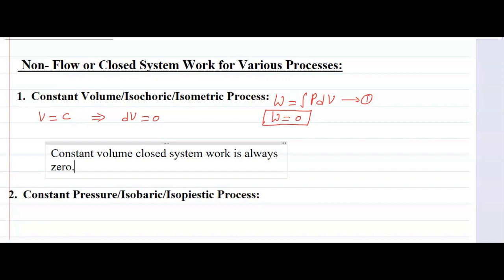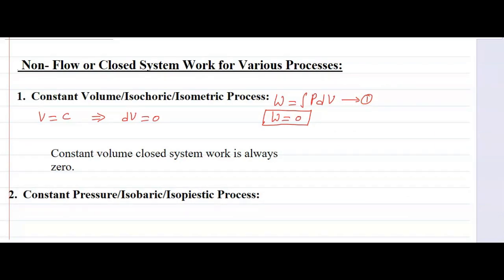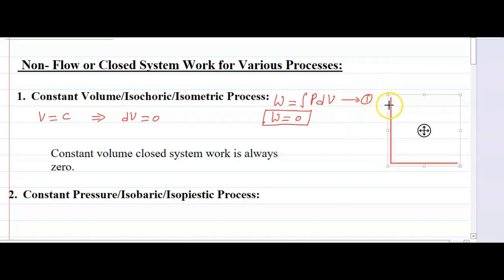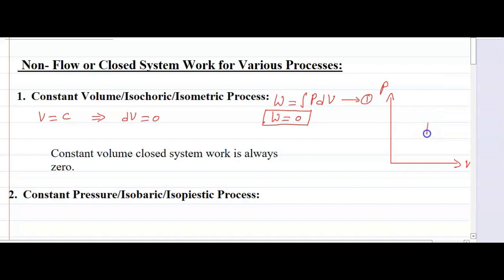Remember this — it is very very important. Now moving to the second one, that is constant pressure, also known as isobaric or isopiastic process. On a PV diagram, constant volume is represented as a vertical straight line. The volume V remains constant while the process moves from state 1 to state 2, and that is your constant volume process.